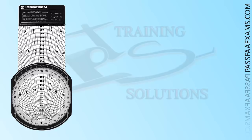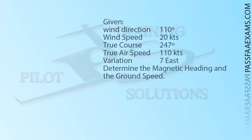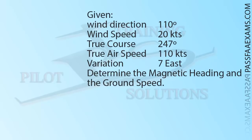For example, let's say we've checked the weather and find out that the en-route wind is 110 at 20 knots. With our plotter we found out the true course of 247, and from the performance section of the POH, we found our true airspeed to be 110 knots. And finally, from the chart we noticed a variation of 7 degrees east. Let's go ahead and see how to determine the magnetic heading and ground speed.